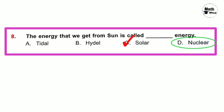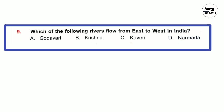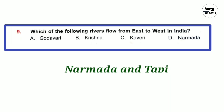Option D — nuclear energy — we get nuclear energy from atoms. Question number 9: Which of the following rivers flows from east to west in India? Narmada and Tapi are both two major west-flowing rivers. So option D is correct — it is also the fifth largest river in our country.